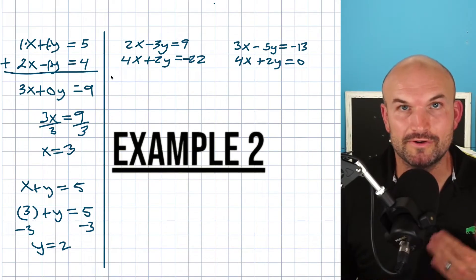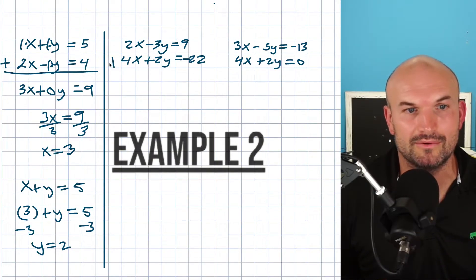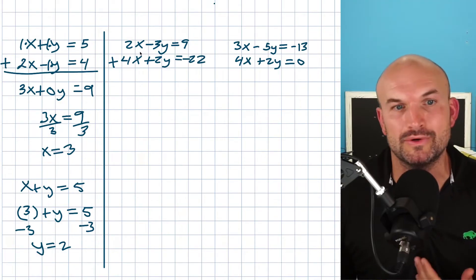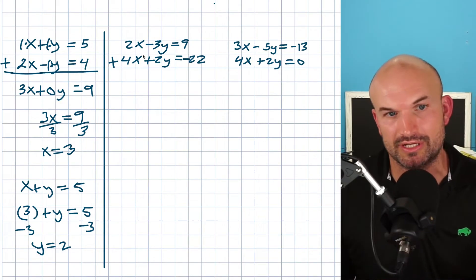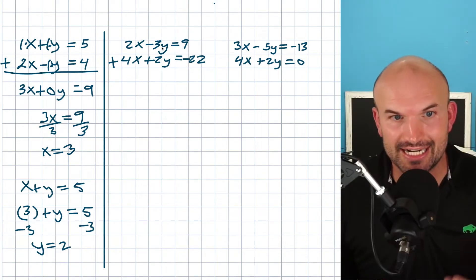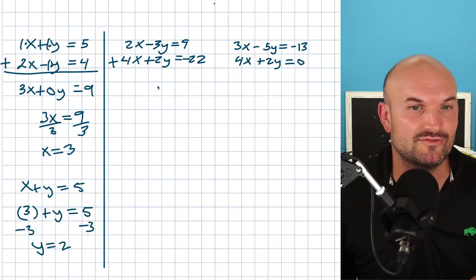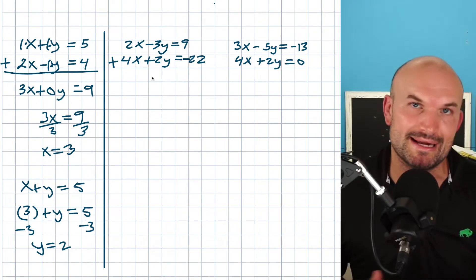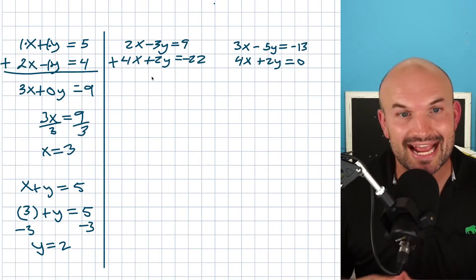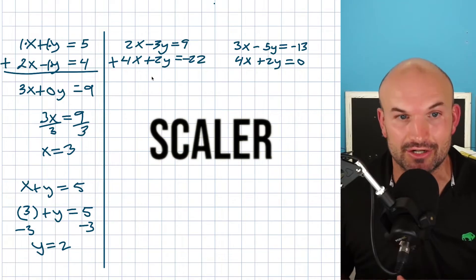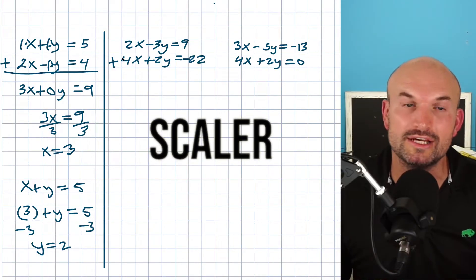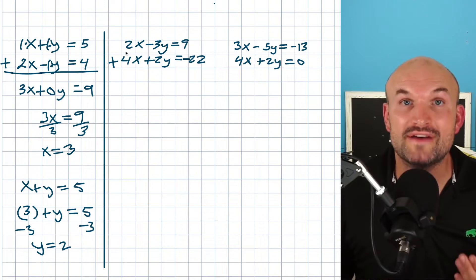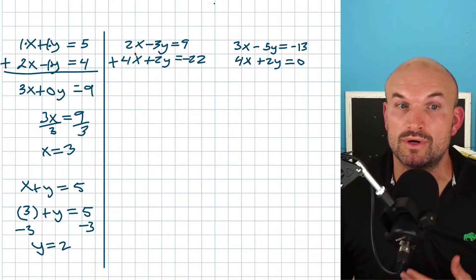Now on this next example, if we were to apply the same operation and just add them up, there's a problem — when I add these two equations, 2X plus 4X is 6X and negative 3Y plus 2Y is negative Y. None of my variables are going to be eliminated. So I need to go back to the drawing board. The answer is actually using a scalar — we're going to multiply one of the equations by a number so that we can get one of the coefficients to be exactly the same as the other.